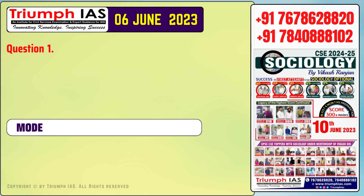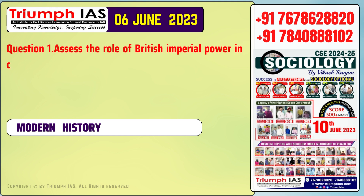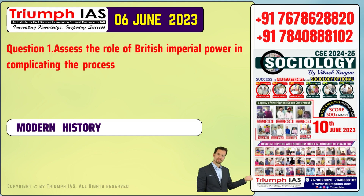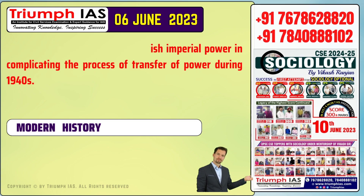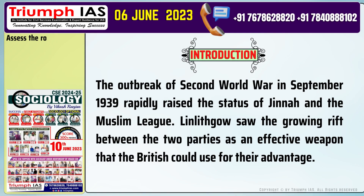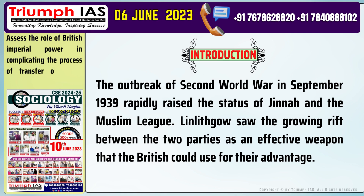Question number 1: Assess the role of British imperial power in complicating the process of transfer of power during the 1940s. Introduction: The outbreak of the Second World War in September 1939 rapidly raised the status of Jinnah and the Muslim League. Linlithgow saw the growing rift between the two parties as an effective weapon that the British could use for their advantage.